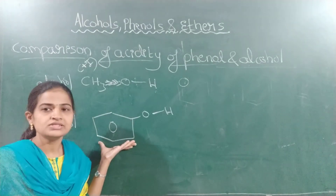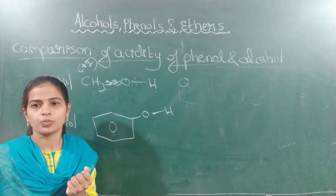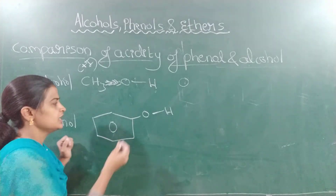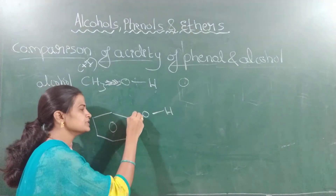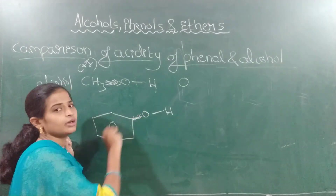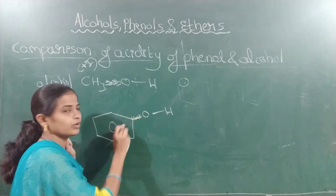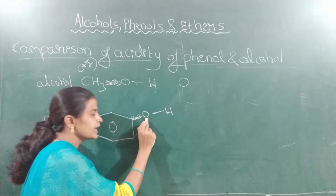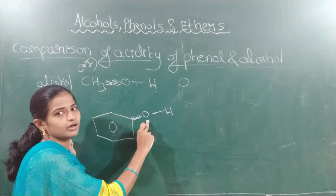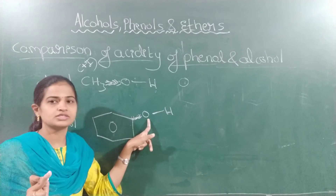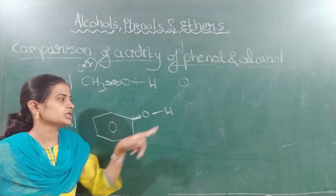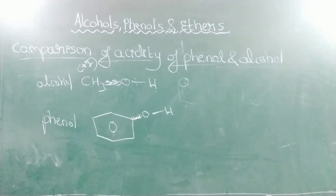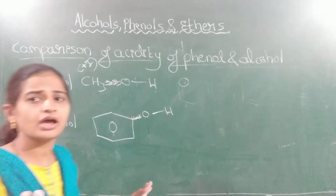We know that benzene is an electron-withdrawing group — it exhibits the minus I effect. Therefore, the shared pair of electrons between the oxygen and the benzene ring moves more towards the carbon atom of benzene. Therefore, the electron density on this oxygen decreases, and hence the polarity between oxygen and hydrogen increases.